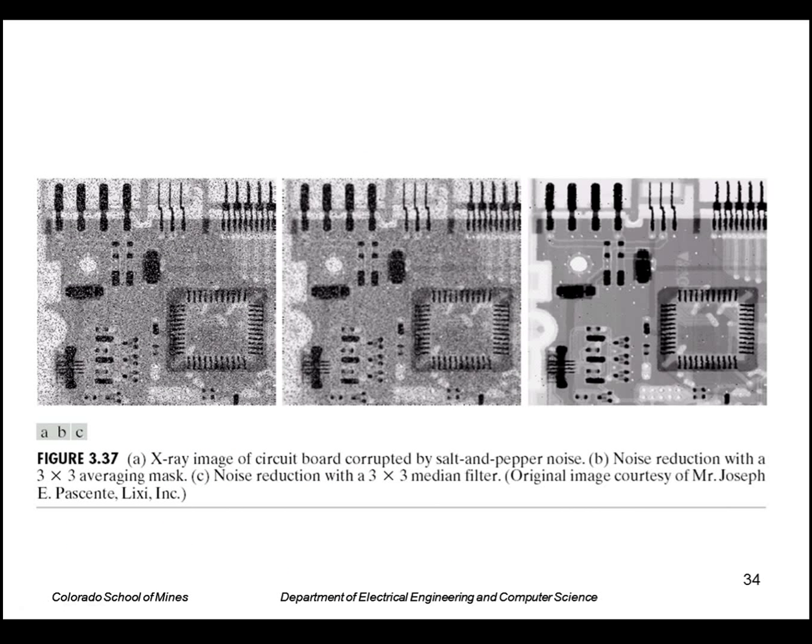This just shows how useful this is for this type of noise. So this image has been corrupted by salt and pepper noise, basically pixels that are sprinkled with black and white noise values. Doing a straightforward mean doesn't really reduce that noise, but the median greatly reduces it.